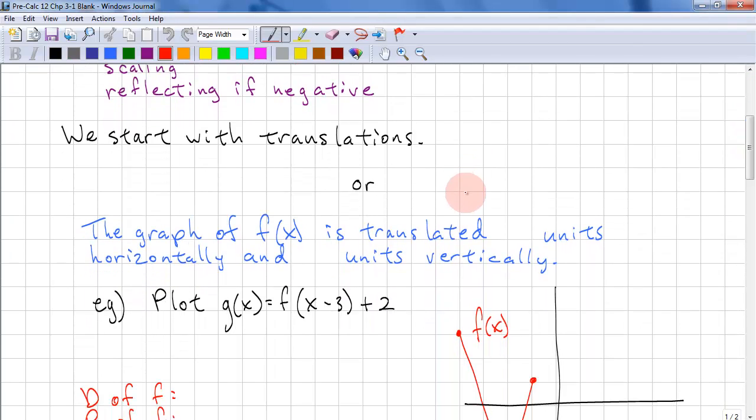With translations we have two forms. We have y equals f of x minus h plus k, or we can have y minus k equals f of x minus h.